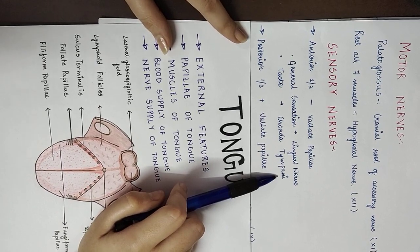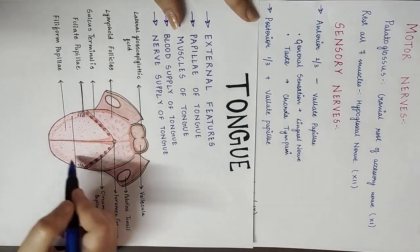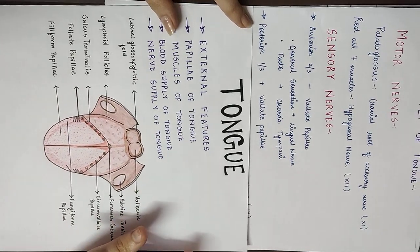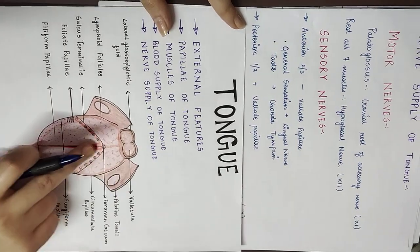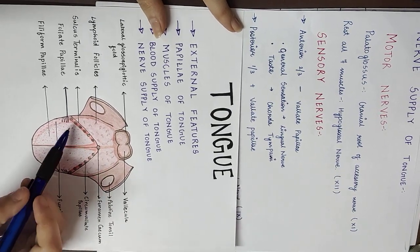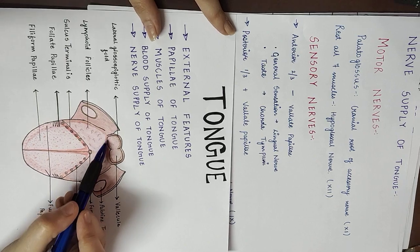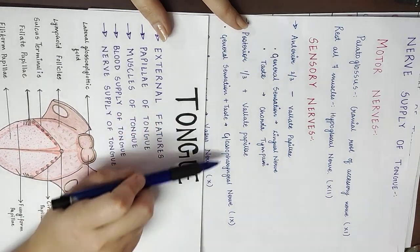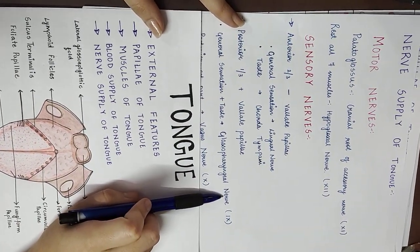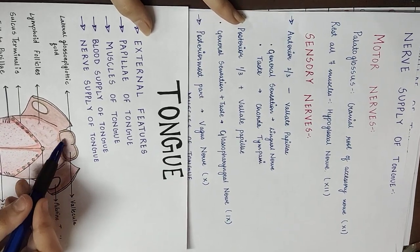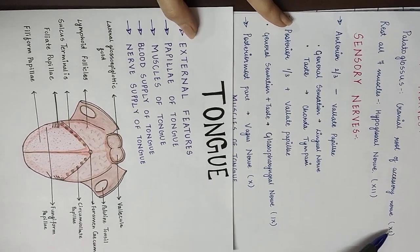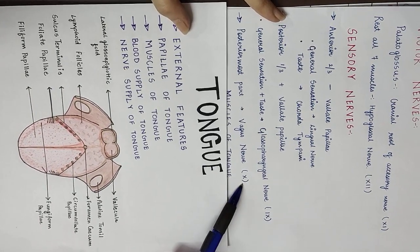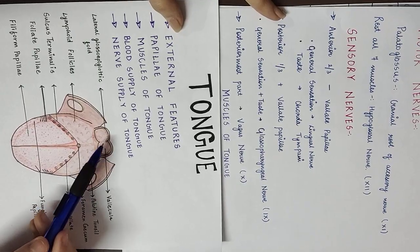For sensory nerve supply: the anterior two-thirds of the tongue — excluding the circumvallate papillae — receives general sensation from the lingual nerve, while taste sensation is supplied by the chorda tympani, which is a branch of the facial nerve. So when examining the facial nerve, we test taste on the anterior two-thirds or tip of the tongue. The circumvallate papillae and the posterior one-third of the tongue receive both general sensation and taste from the glossopharyngeal nerve, which is the 9th cranial nerve.